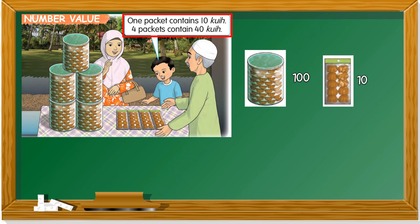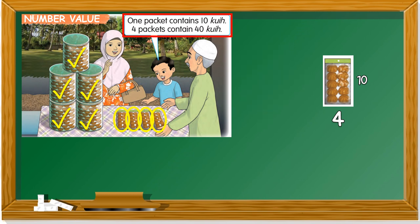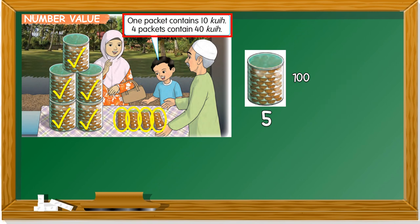Can we count how many kuihs are there on the table? One, two, three, four, five — there are five big containers of kuih. How about the packets? One, two, three, four — so there are four packets. That gives us five of 100 and four of 10.